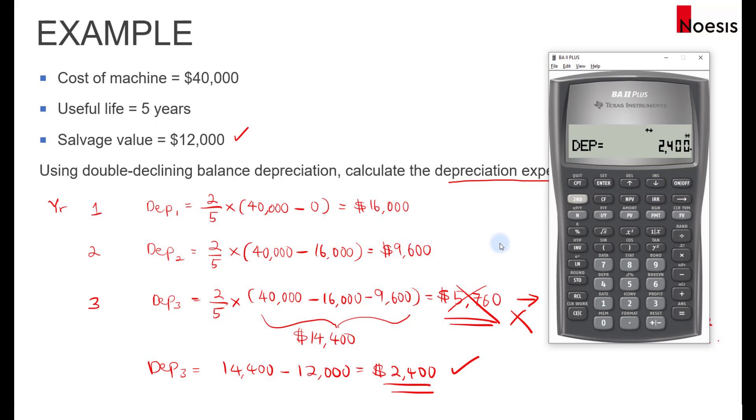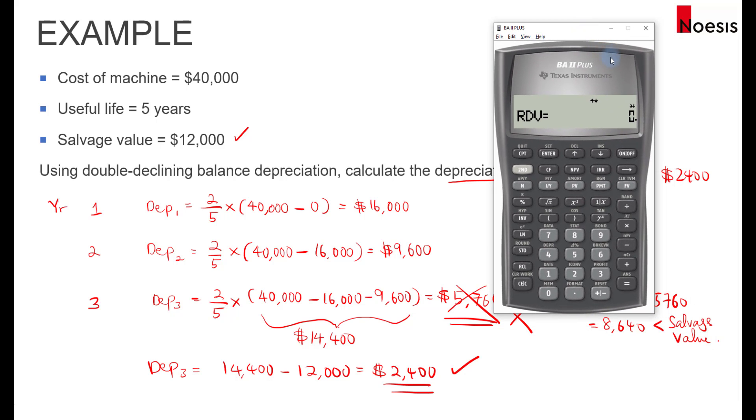If you can use the calculator correctly, then this is quite a useful method to compute depreciation. Of course, understanding the formula is also important. But in the exam, for efficiency purposes, learn how to use the calculator. If I scroll down, the remaining book value will be 12,000, and the remaining depreciable value will be zero. So in other words, from year four and year five onwards, the depreciation expense will be zero, respectively. That's the end of the video.